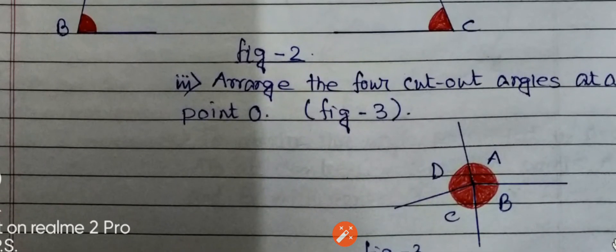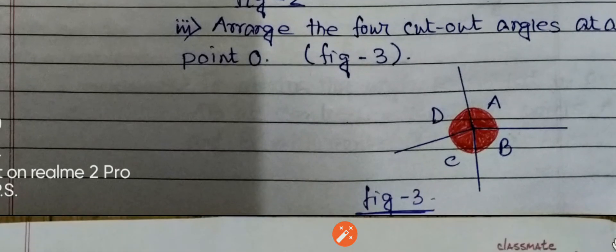Now we arrange these four cutouts around a point O as we have done here in this way. We arrange all four consecutively like this.